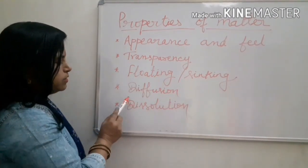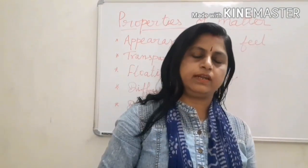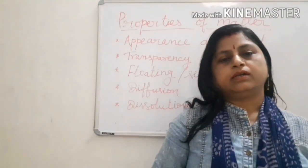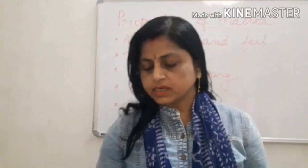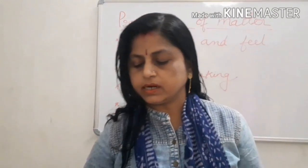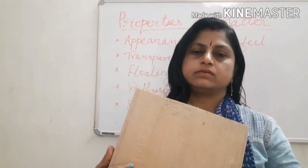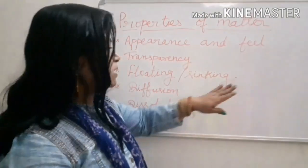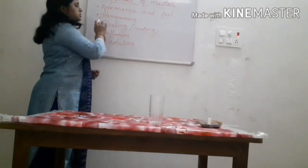The properties of matter include: appearance and feel, transparency, floating and sinking, diffusion, and dissolution. Some materials differ from one another in terms of their appearance and feel. Some materials are lustrous in appearance and some materials are dull in appearance. We also feel that some materials are smooth and some materials are rough.